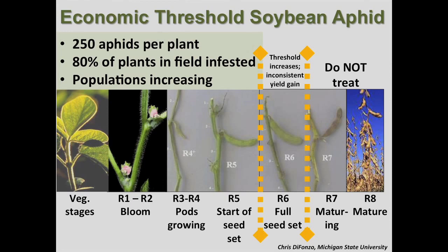Aphids can occur in hot spots, but treatment decisions should be based on a broad sample of randomly selected plants. Use the action threshold of 250 aphids per plant, 80 percent of the plants in the field infested, and when populations are actively increasing.